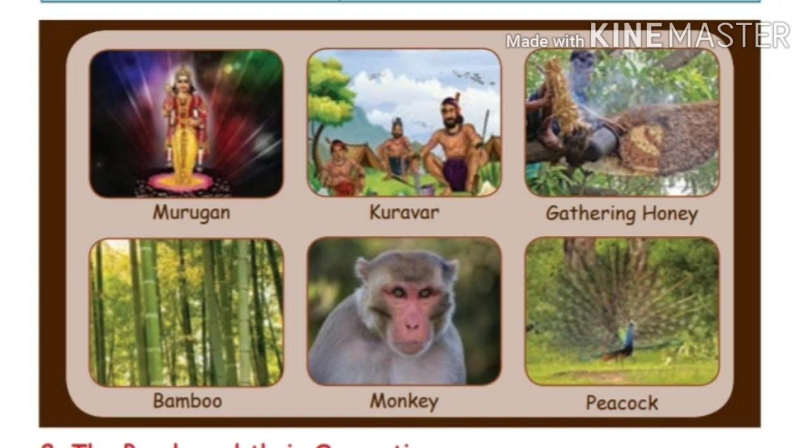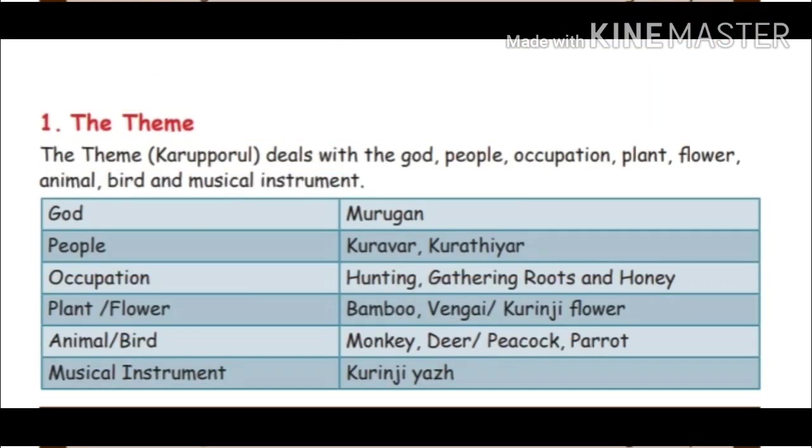Next, the theme. The theme means the main characteristics of the land. The theme deals with the god, people, occupation, plant, flower, animal, bird and musical instrument of each land type.